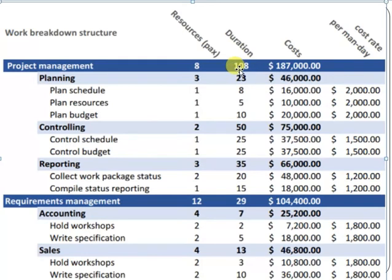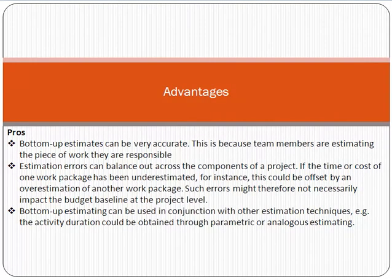Bottom-up estimation is more accurate. Its advantages are: it is very accurate, and estimation errors can balance out across the components of a project. If the time or cost of one work package has been underestimated, this could be offset by an overestimation of another work package. Bottom-up estimation can also be used in conjunction with other estimation techniques — for example, activity duration could be obtained through parametric or analogous estimation.